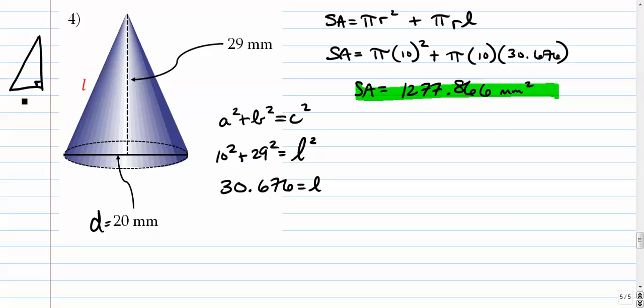Alright, because our right triangle if we were to draw it separately is 10, 29, and l. That pretty much takes care of the cone lesson. Next up we're going to do cylinders and then get into pyramids and spheres.